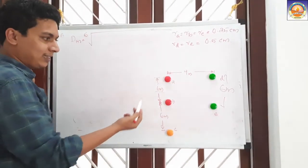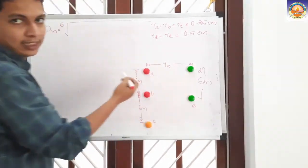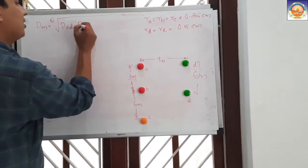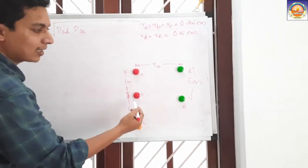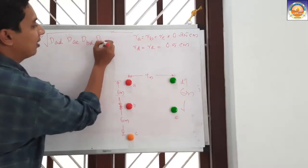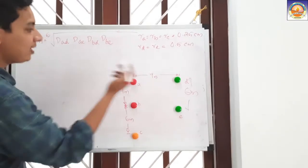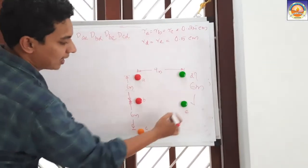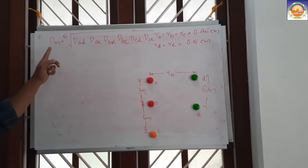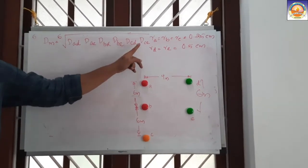The mutual distances are: when you consider conductor A, the distances to D and E are d_AD and d_AE; similarly for conductor B: d_BD and d_BE; and for conductor C: d_CD and d_CE. These are the 6 terms inside our GMD expression: d_AD, d_AE, d_BD, d_BE, d_CD, d_CE.